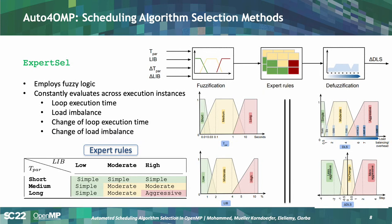The last selection method is expert selection, which uses fuzzy logic and constantly evaluates which scheduling technique to use. Using fuzzy logic, we define fuzzy rules based on our expertise about scheduling algorithms and loop characteristics. For example, if load imbalance is low and the loop execution time is very short — indicating a simple loop — then we should use a simple scheduling algorithm. Simple, moderate, and aggressive scheduling algorithms are also defined as fuzzy sets.